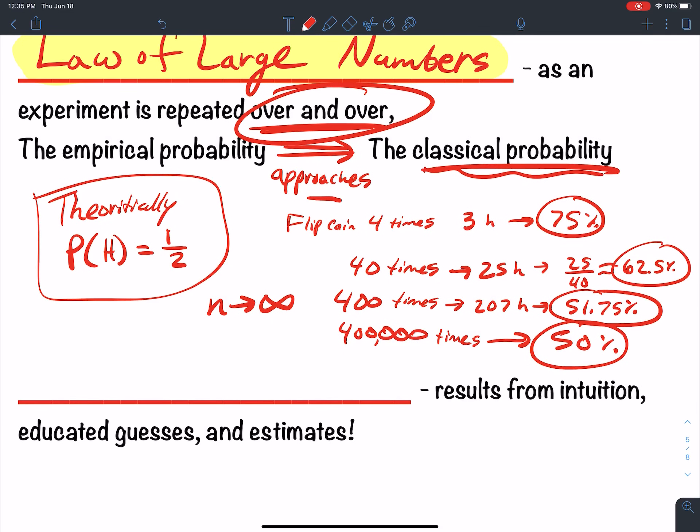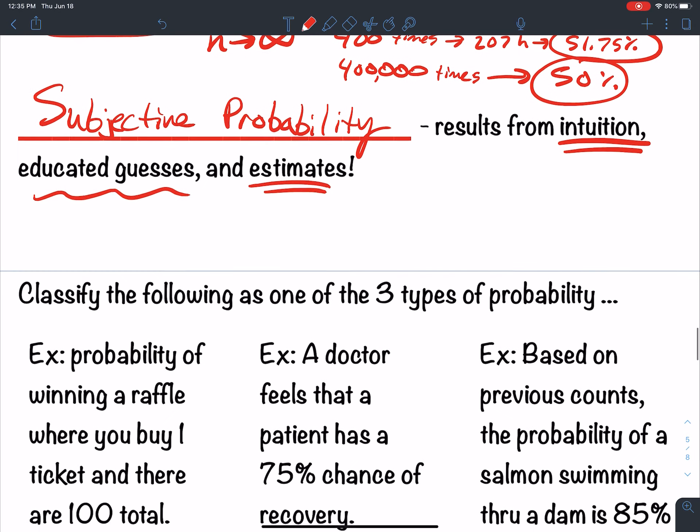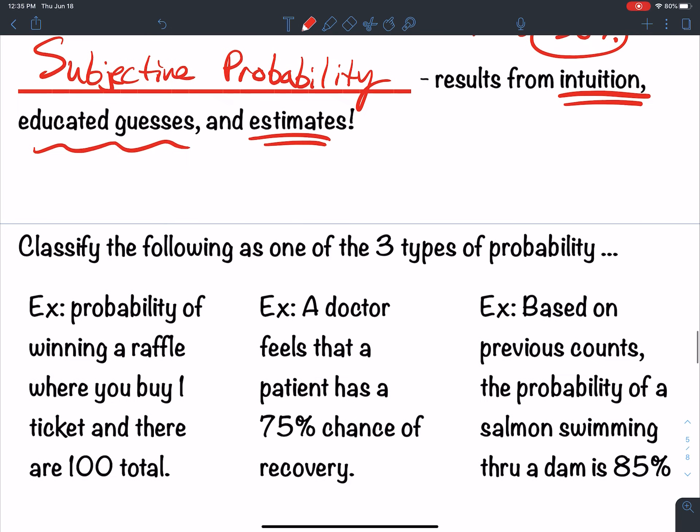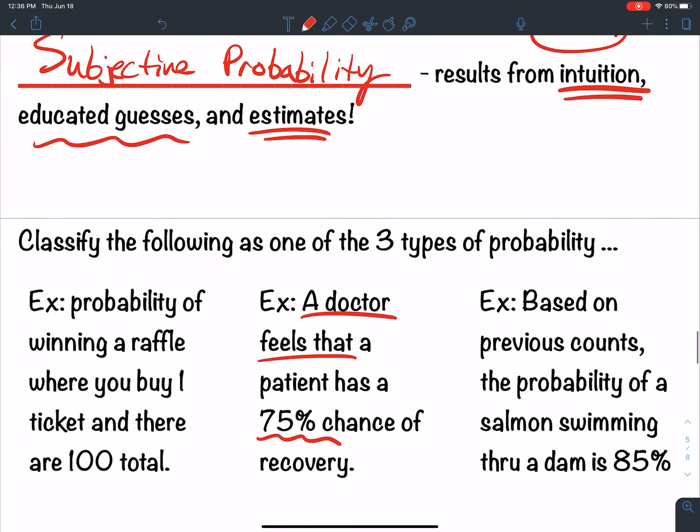The last type is subjective. Subjective probability is just like it sounds, it's subjective. The results are from intuition, educated guesses, or estimates. So typically you hear something from a doctor. So classifying the following as one of the three types of probability. A doctor feels that there's a 75% chance that the patient recovers. This isn't based off of empirical evidence, it's just I got this gut feeling that they're going to probably be walking with a 75% chance. And so this is based off of intuition, it's educated guess. It's not based off of data, it's just based off of what someone in this profession believes to be true. This is subjective.